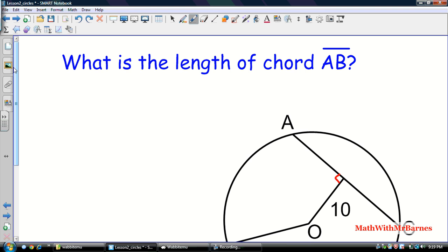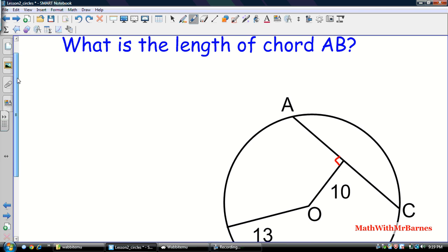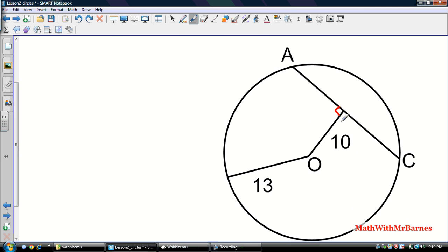All right, let's see. What is the length of chord AC? We're looking for this chord. We have a slightly different situation here. We have a line coming from the center and is intersecting this chord at a right angle. So if we have a line coming from the center and intersects the chord at a right angle, that means that this guy is perpendicularly bisected. So if we're looking for this chord AC again, we'll use half.